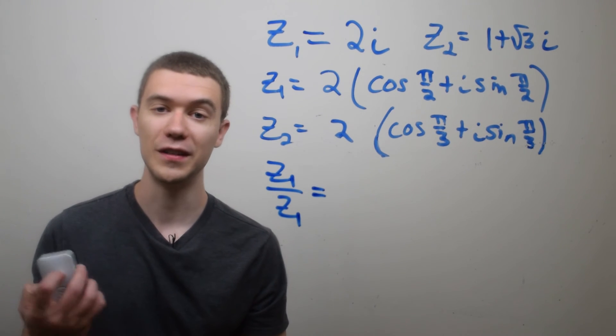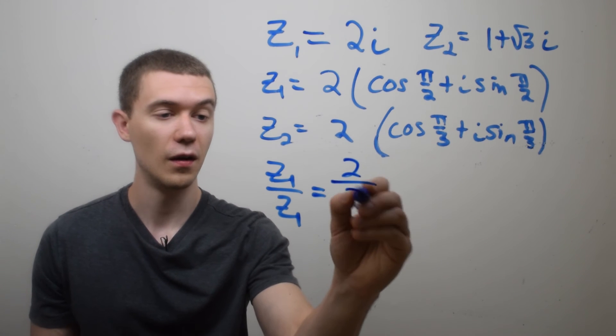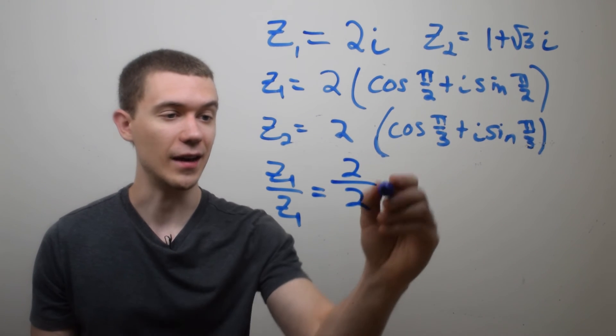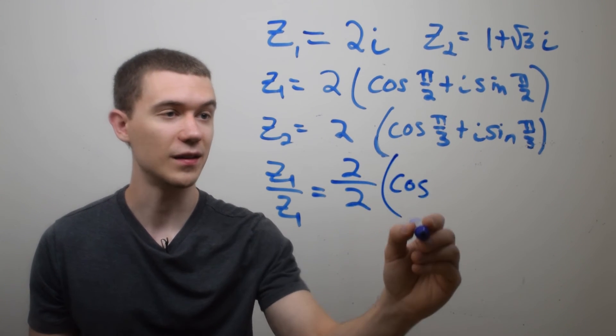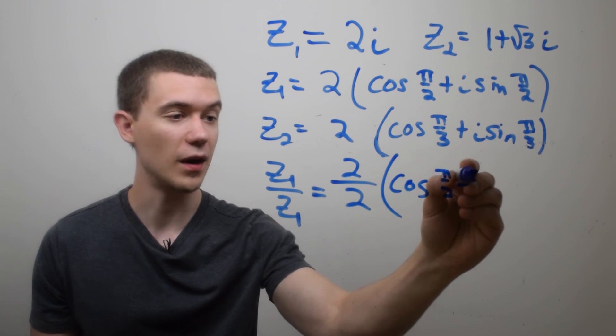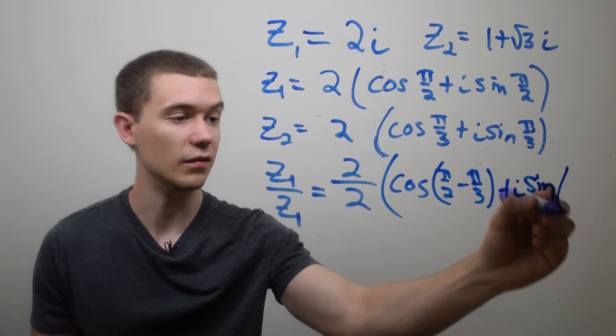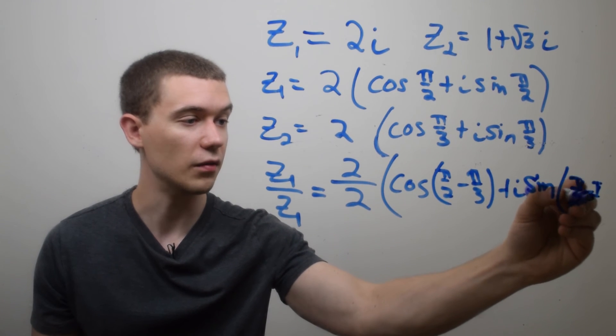Now let's do the division z1 divided by z2. So this time, I divide their radii, I divide the modulus, and I subtract the arguments. So in this case, it's going to be π/2 minus π/3 as the new argument, plus i sine of π/2 minus π/3.